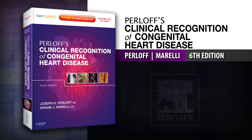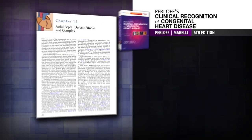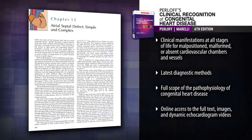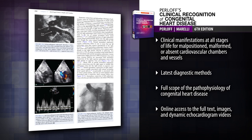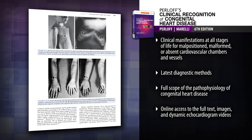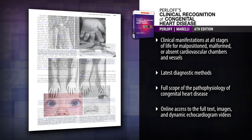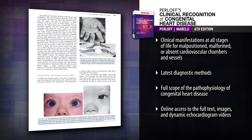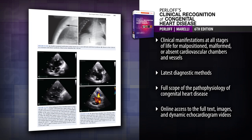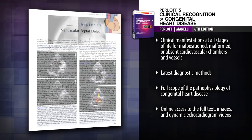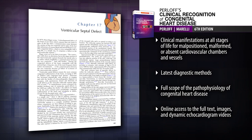Introducing Clinical Recognition of Congenital Heart Disease, 6th edition — fully updated and in vibrant color. This resource equips you to effectively diagnose the entire spectrum of congenital heart disease from birth through adulthood, and to recognize the clinical manifestations at all stages of life, from malpositioned, malformed, or absent cardiovascular chambers and vessels.